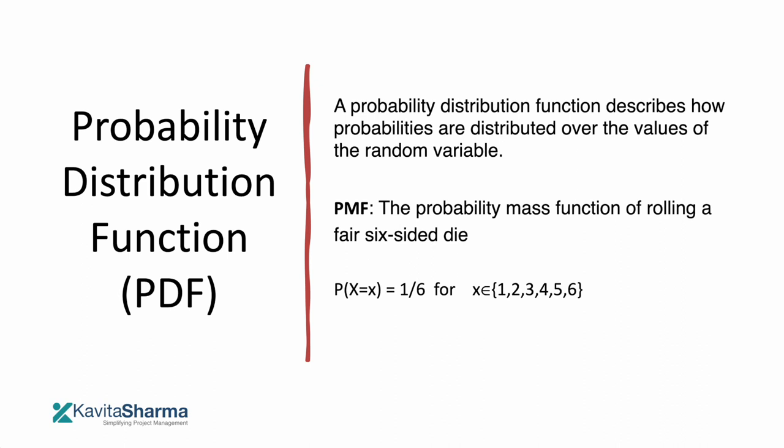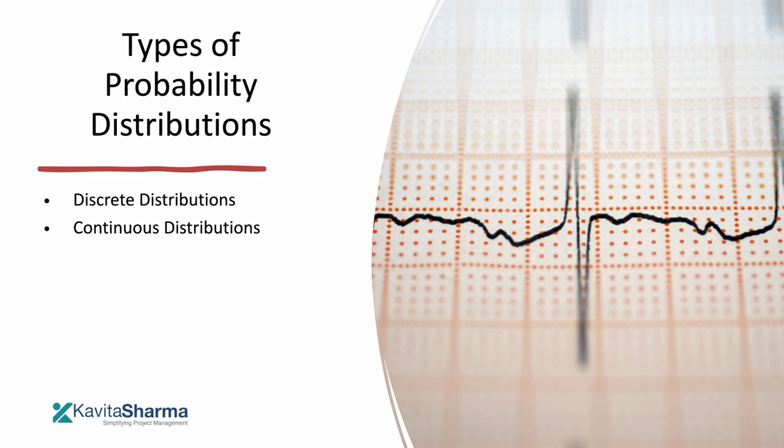When we talk about probability, we also talk about different types of distributions and equations. A distribution function describes how probabilities are distributed over values of a random variable. For a six-sided die, the probability of any outcome X is 1/6. Different types of probabilities have different distribution functions.